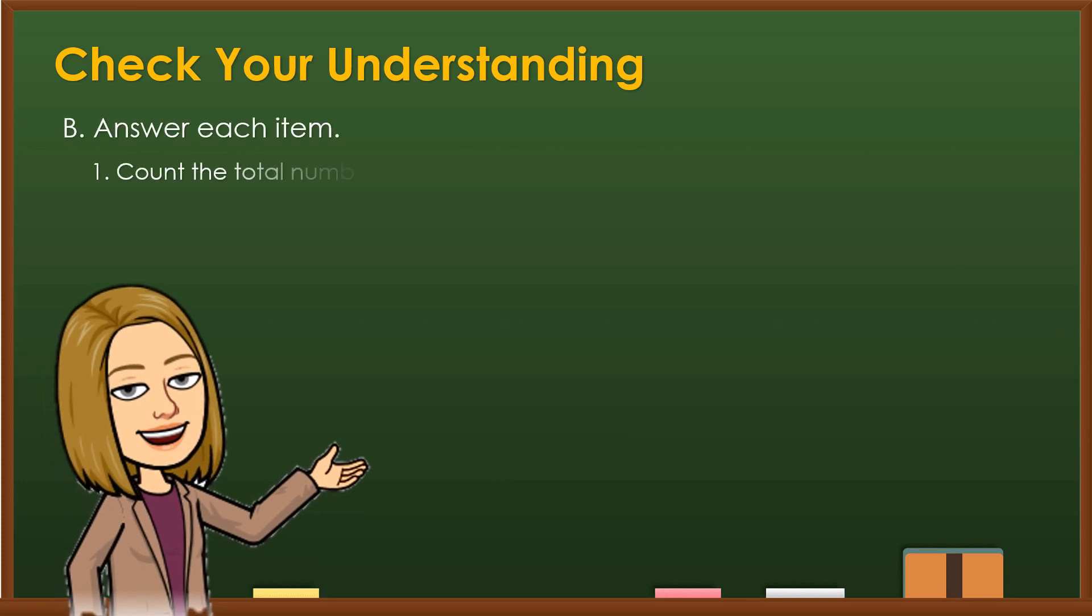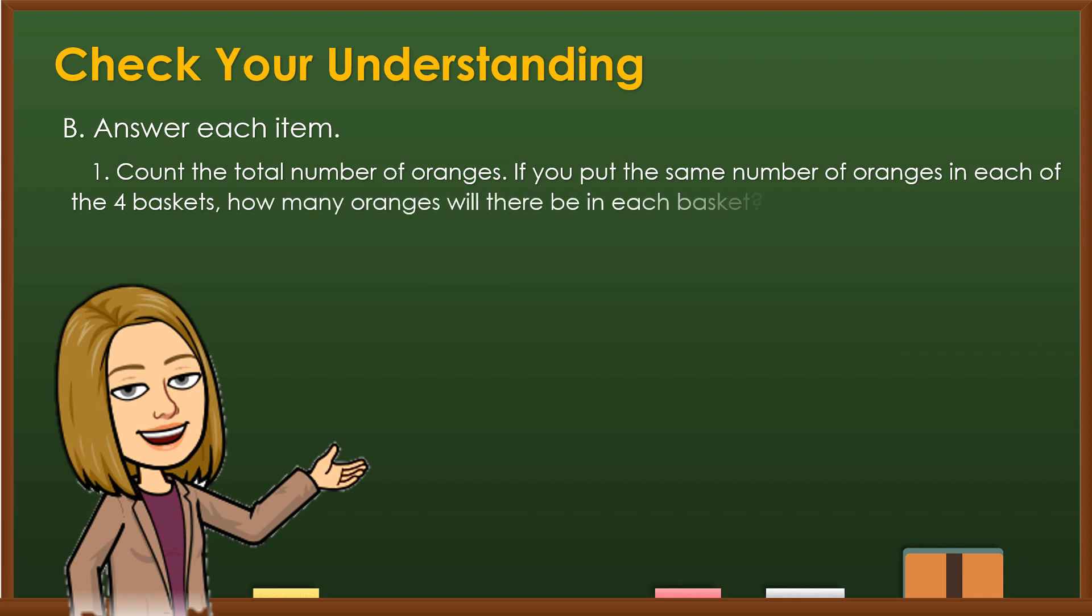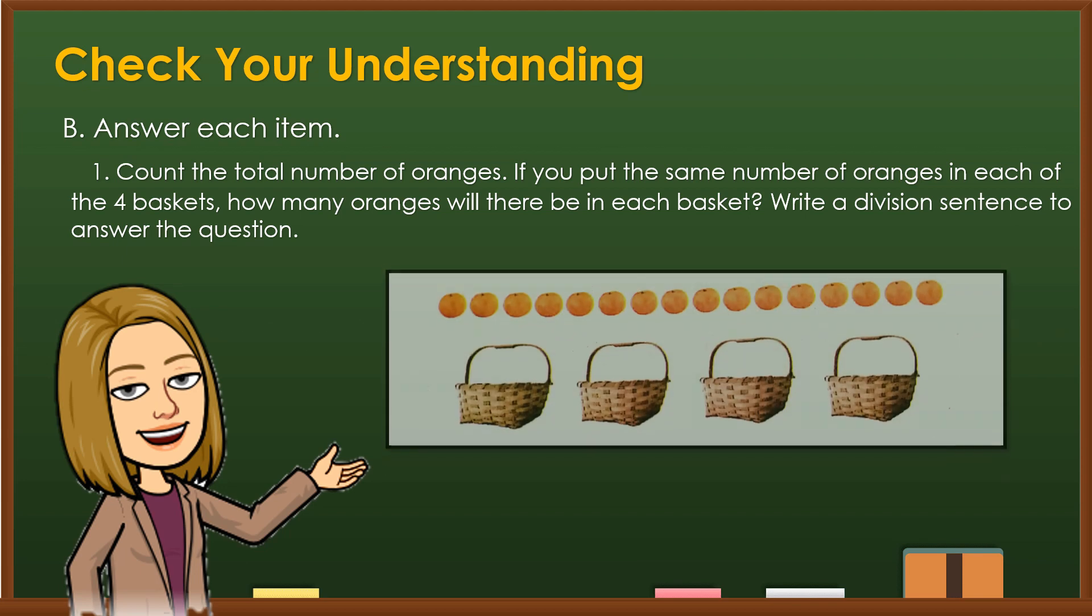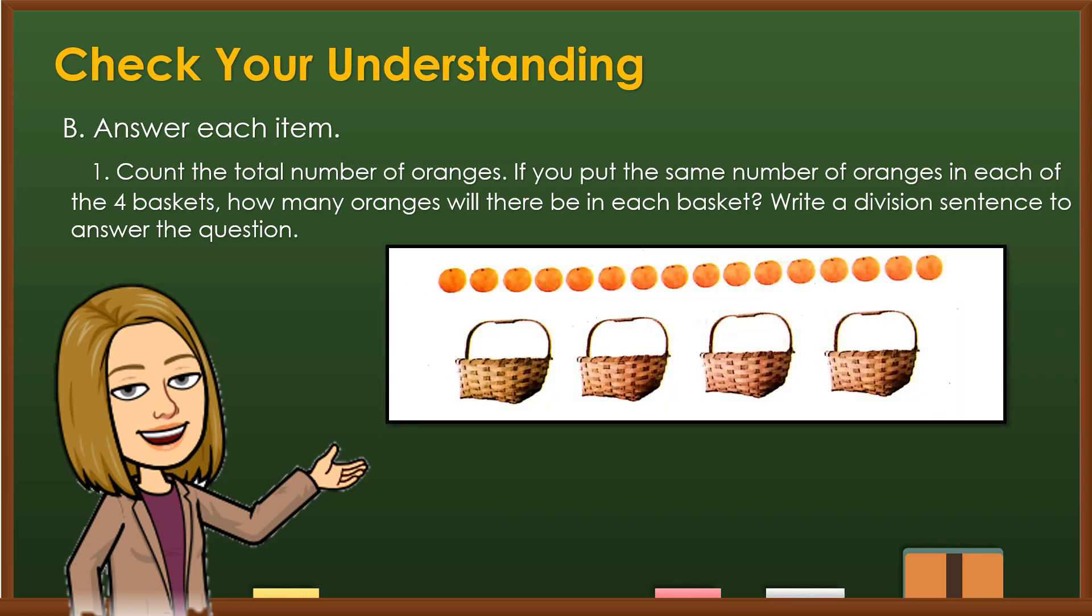For each item, count the total number of oranges. If you put the same number of oranges in each of the 4 baskets, how many oranges will there be in each basket? Write a division sentence to answer the question. Very good! 16 divided by 4 is equal to 4. Therefore, there are 4 oranges in each basket.